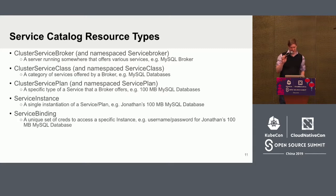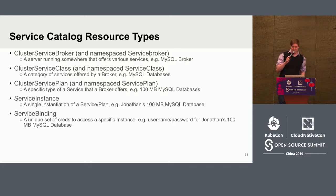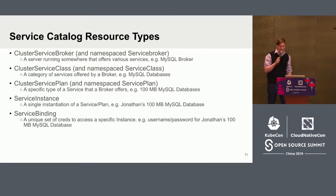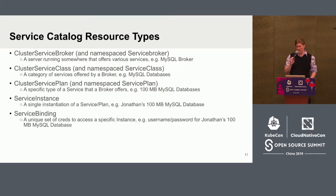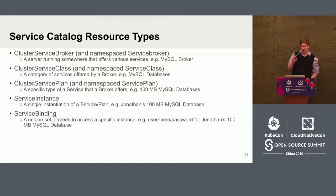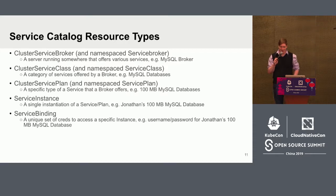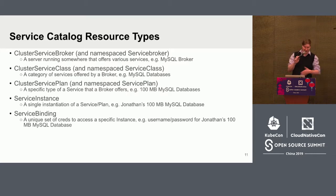The types are Cluster Service Broker, Cluster Service Class, Cluster Service Plan, Service Instance, and Service Binding, as well as namespace representations of each. Going back to the archetypal example: a Cluster Service Broker would be a MySQL broker. The class would be MySQL databases. That service class would have plans — different flavors of databases, like 100 megabyte MySQL databases. When a user provisions an instance of that class and plan, that's called an instance — Jonathan's 100 megabyte MySQL database. And when we create bindings to that instance, that's a set of unique credentials — a single username and password for accessing that database.